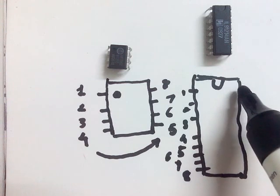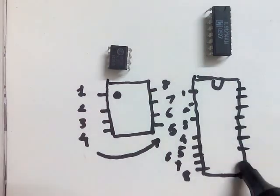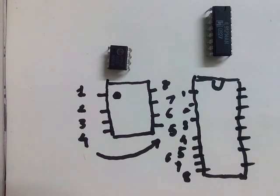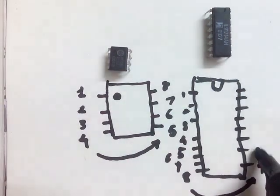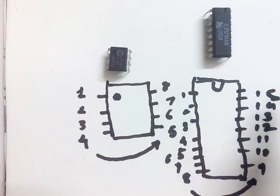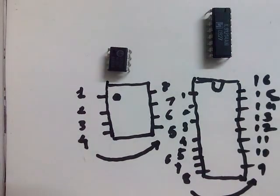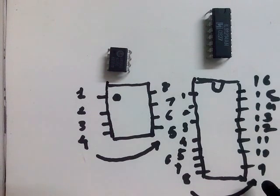Now for the pins on the opposite side of the 16-pin IC, be sure to number them right from the bottom side. So this will be pin number nine, then 10, 11, 12, 13, 14, 15, and the last one will be 16. So pin number nine is at the bottom of the opposite side, not the top. This is how the pins of ICs are identified.